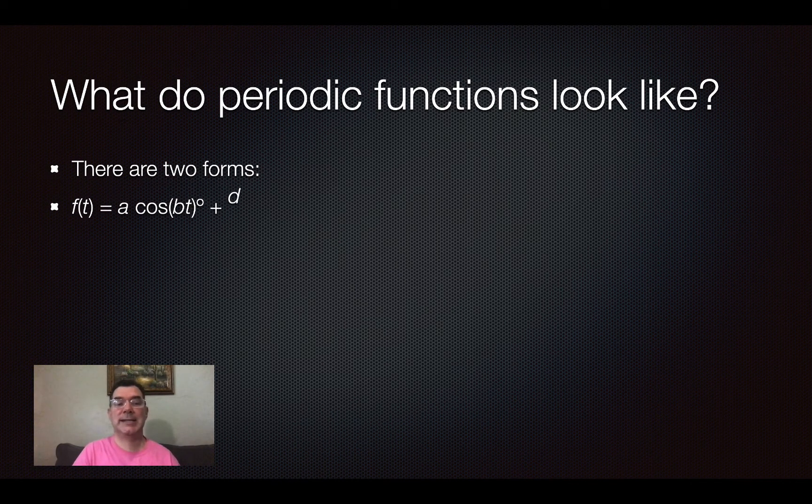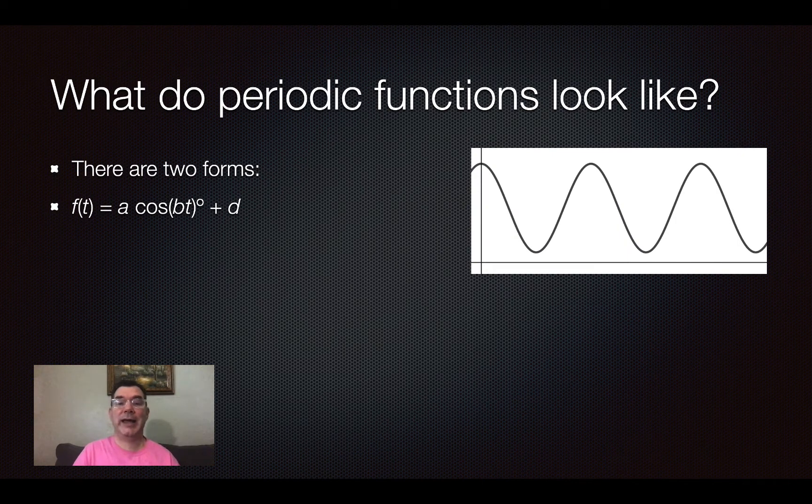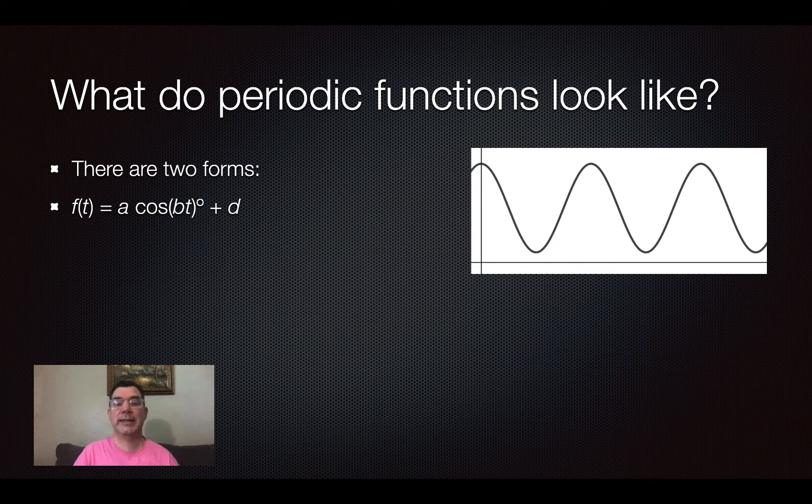Well, they are functions that take on two forms. They can either have a cosine function in them, which is represented by this graph at the right.